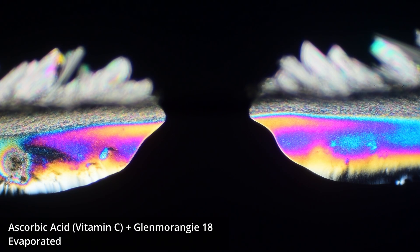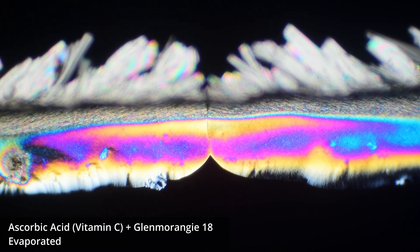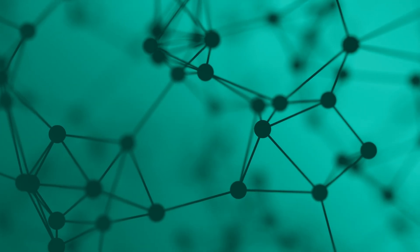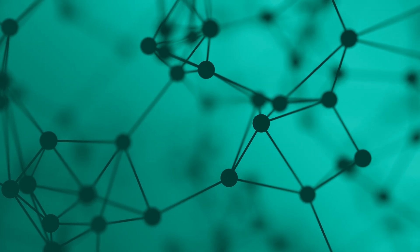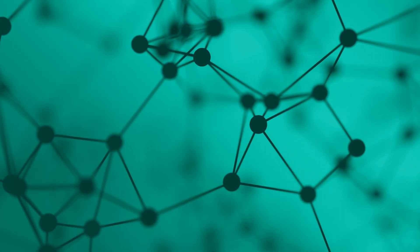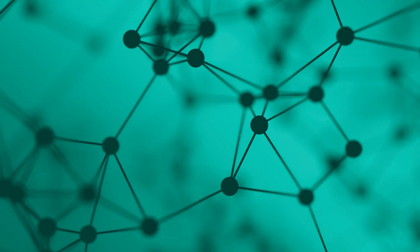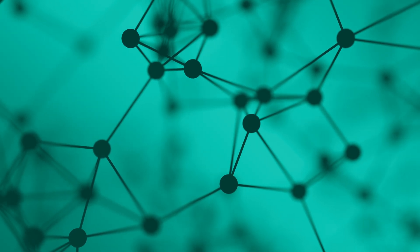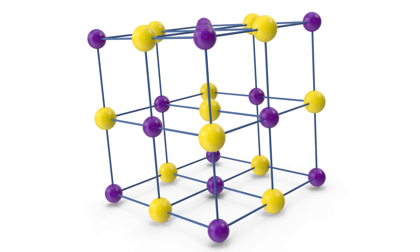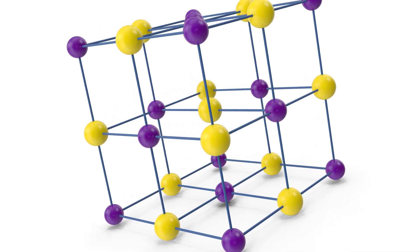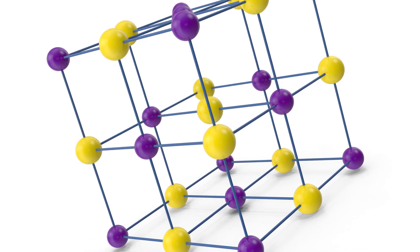To understand what we're creating, we need to start with fundamentals. A crystal is a solid material whose atoms or molecules are arranged in a repeating, ordered pattern, what scientists call a crystal lattice. This isn't random. It's nature's way of minimizing energy by finding the most stable arrangement.